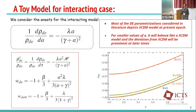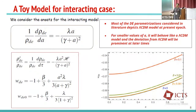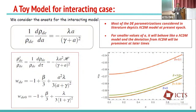Applying this ansatz to the interacting model, one can calculate the equation of state parameter w_DE, which governs the dynamics of the dark energy model. It comes out in a form where lambda and gamma are model parameters and beta is the interaction strength. Plotting w_DE against scale factor a, we find that at earlier times it is closer to the Lambda CDM model, but as the universe evolves it deviates. Increasing the interaction strength produces a larger deviation from Lambda CDM.